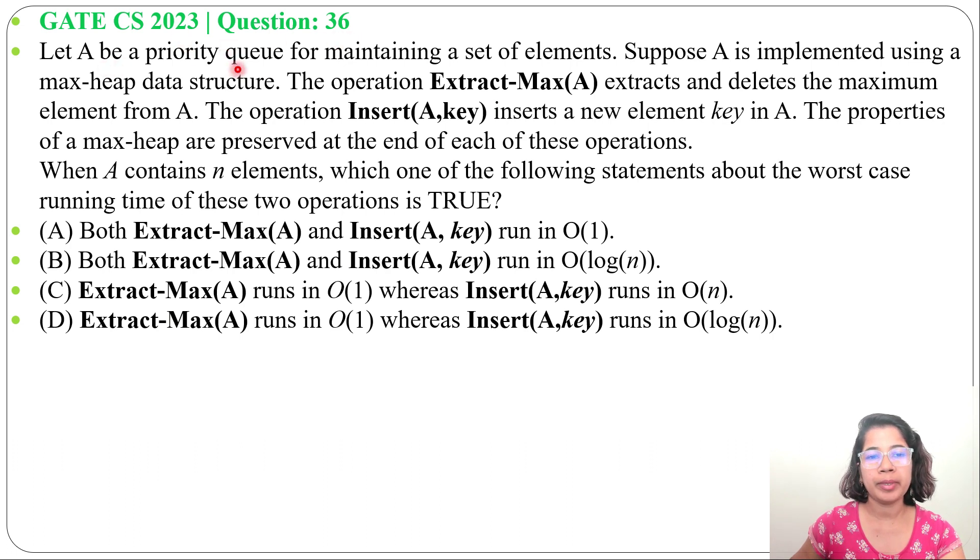Let A be a priority queue for maintaining a set of elements. Suppose A is implemented using a max heap data structure. The operation Extract-Max(A) extracts and deletes the maximum element from A. The operation Insert(A, key) inserts a new element key in A. The properties of a max heap are preserved at the end of each of these operations.